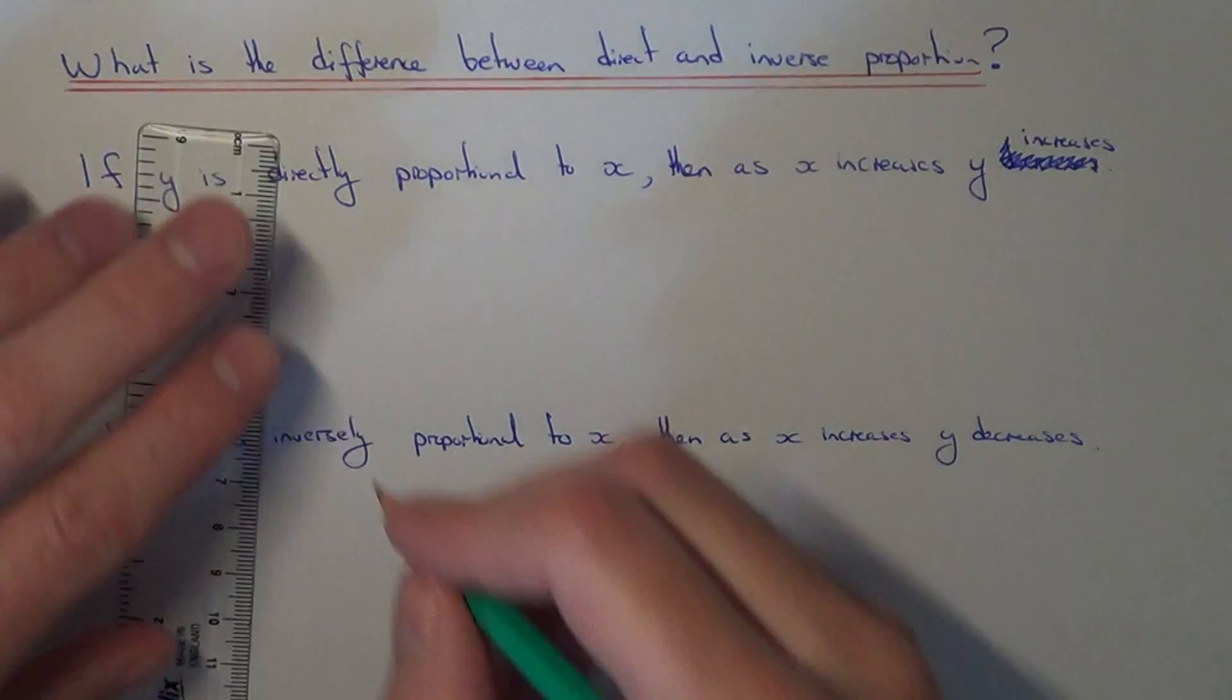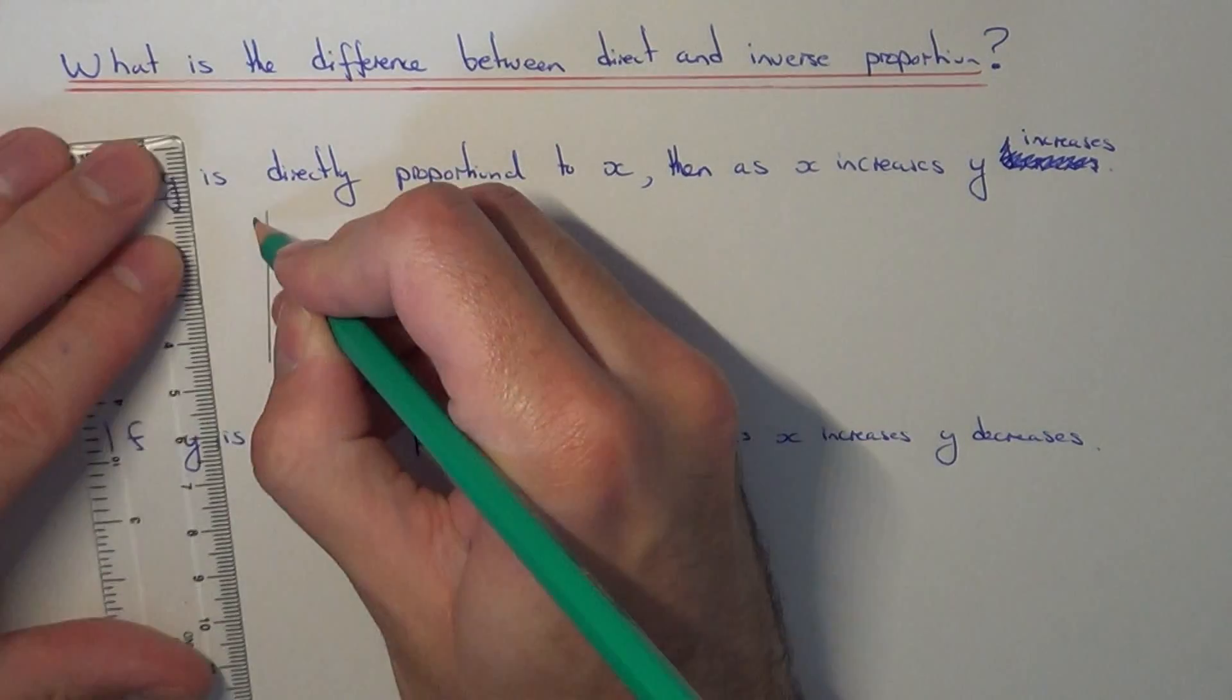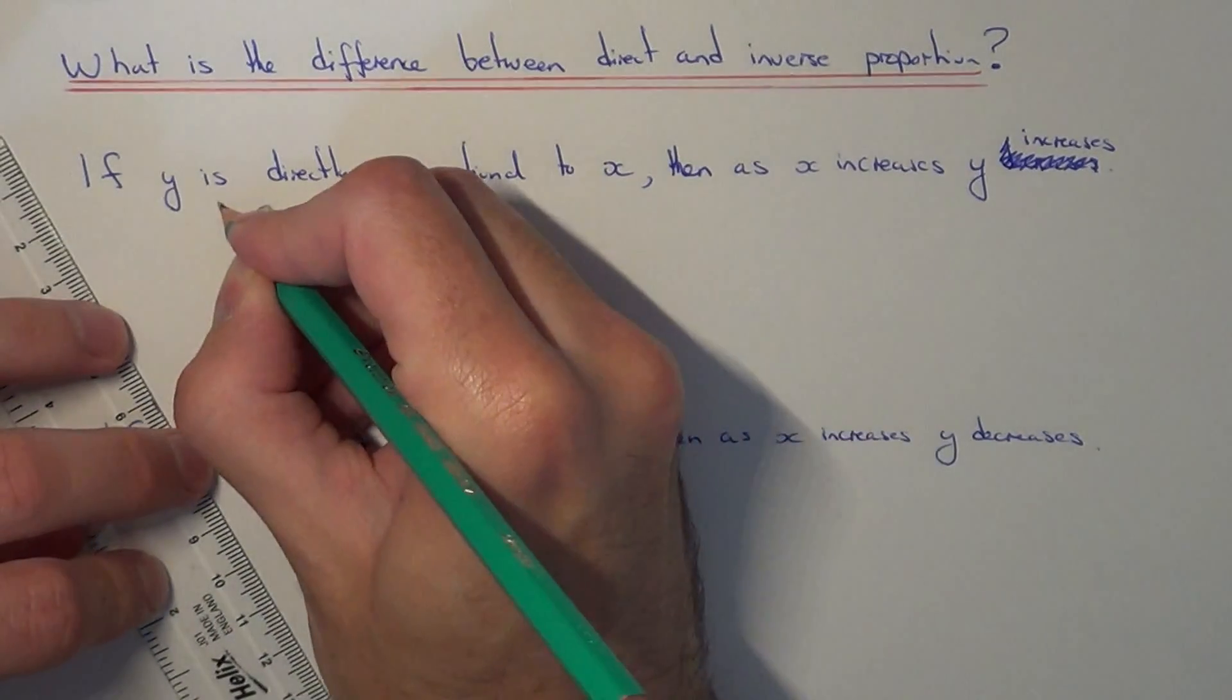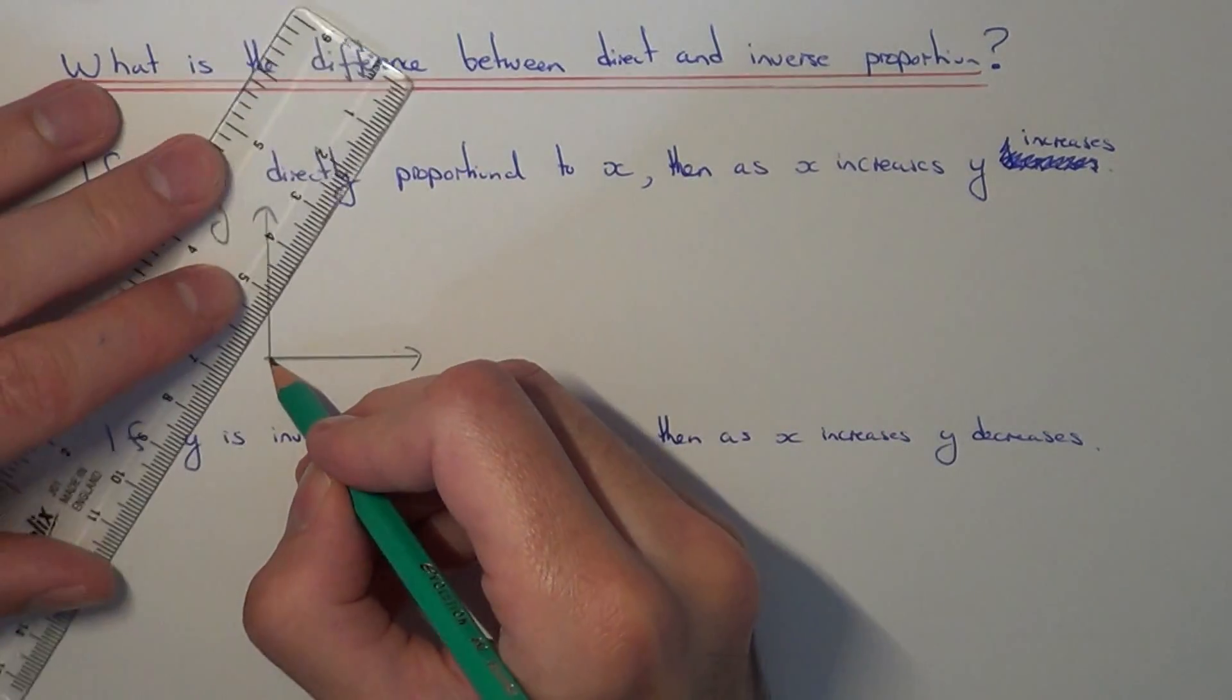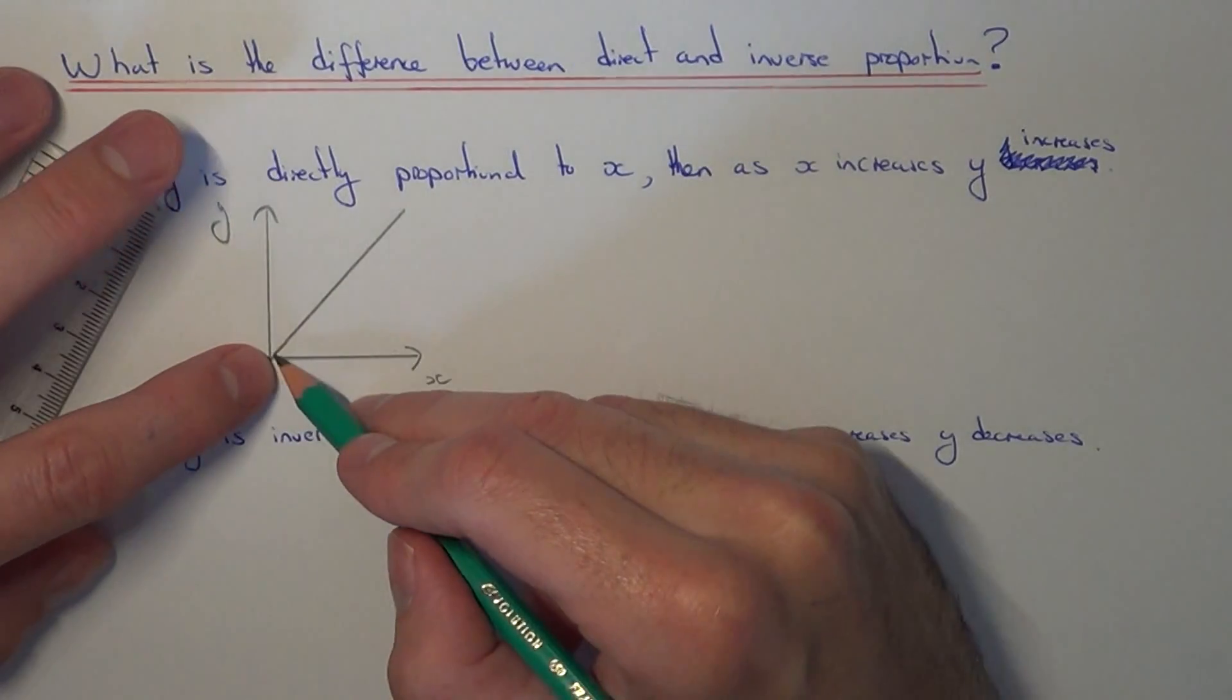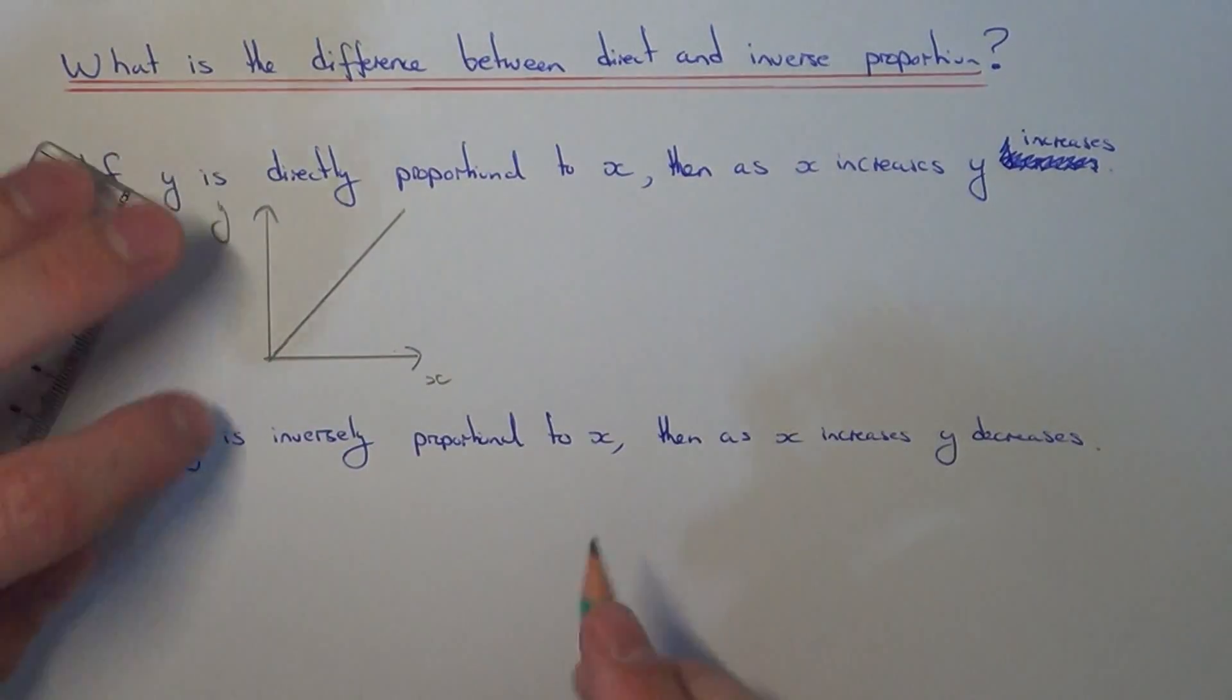So if we had to draw a graph out of direct proportion, it would look something like this. So as x gets bigger, as you see, the y coordinates also get bigger.